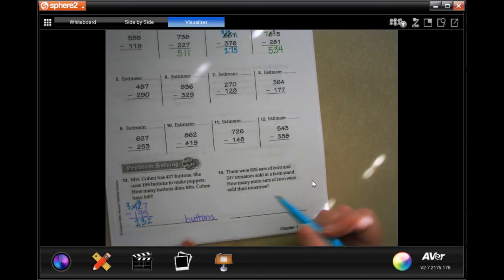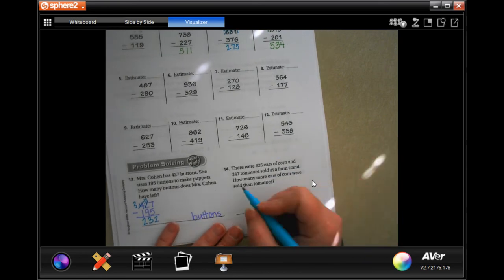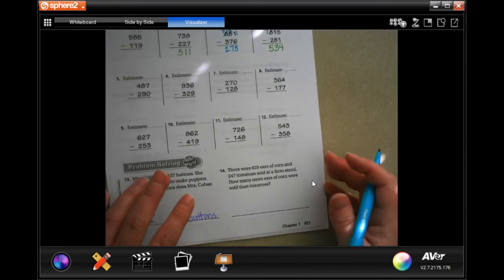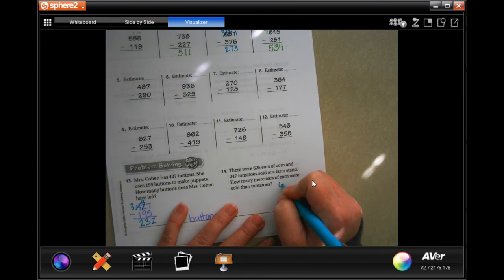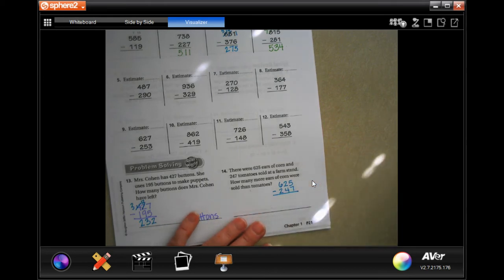There were 625 ears of corn and 247 tomatoes sold at a corn stand. How many more ears of corn were sold than tomatoes? So, 625 minus 247.